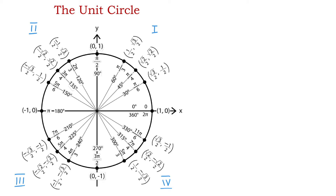In quadrant 3, the angles between 180 and 270 degrees are 210, 225, and 240 degrees. In quadrant 4, the angles between 270 and 360 degrees are 300, 315, and 330 degrees. These are special angles in trigonometry, and of course we can draw unit circles that have fewer or more angles.